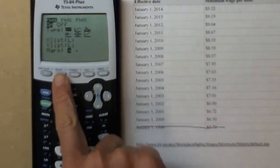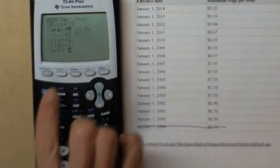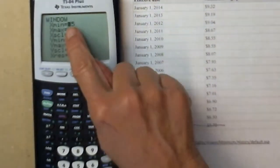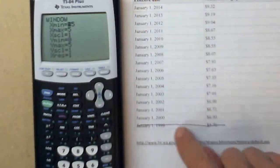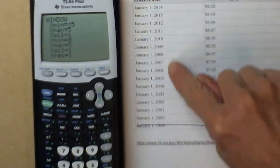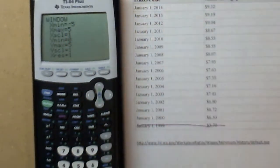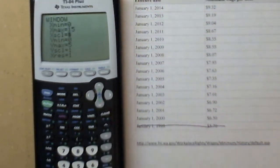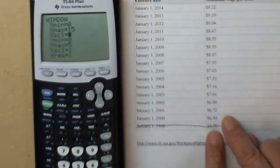Now I want to check my window. My x-min, negative 5, well I don't have any negative time. In fact, I start at 0 and I go to 14. So I'm going to start at 0 and I'll go to 15, and I'll have a scale every 1.